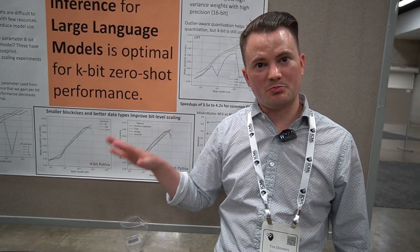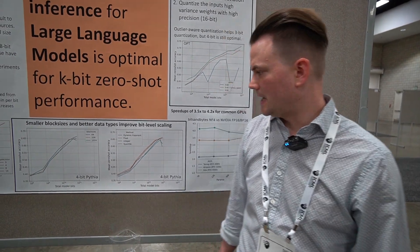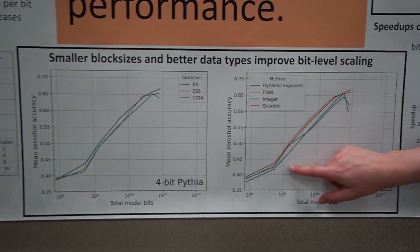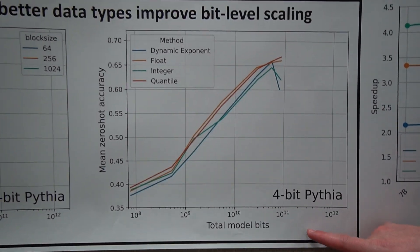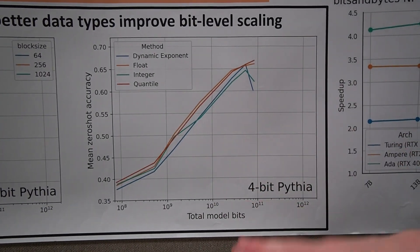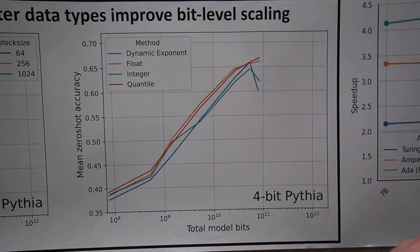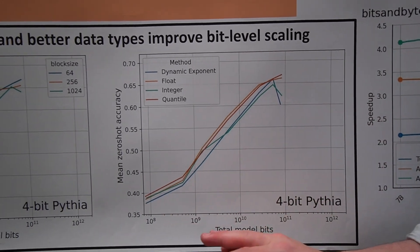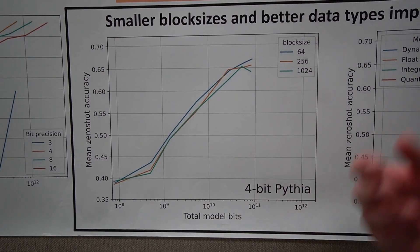One remaining question is: can we do better with 4-bit using other methods to improve the overall bit scaling trend? We find two things. First, data types matter: an integer data type gives lower average performance per bit, while a floating point data type gives higher average performance. Data types can make a difference and improve bit-level scaling. The improvements look rather small but are significant and important.